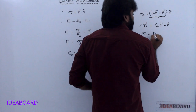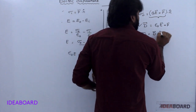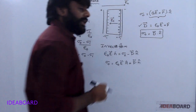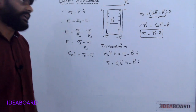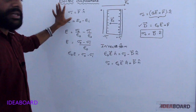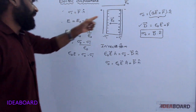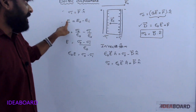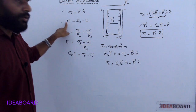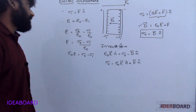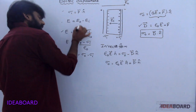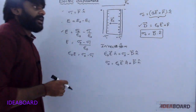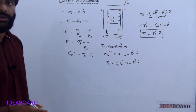So D-bar is equal to epsilon-naught E-bar plus P-bar. This is the electric displacement. Also, sigma-naught is equal to D-bar dot n-cap. The dielectric is placed inside the electric field, and based on that the net electric field is E-naught minus E-i. Finally, D-bar equals epsilon-naught E-bar plus P-bar.